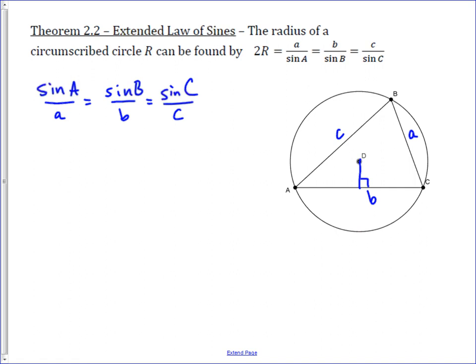So, if we draw in a perpendicular bisector to AC through point D, we know it goes through point D because D is the center of the circle, and that center is found by connecting up the three perpendicular bisectors. So, we're going to use this fact by extending it to where it intersects the circle.